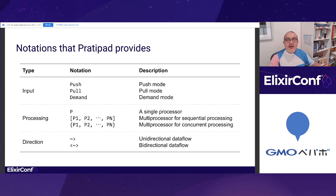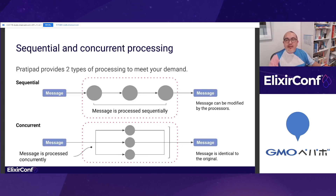Platypad provides two ways for message processing: sequential and concurrent. Sequential processing can be used when you want to process messages step by step — each processor transforms the message and passes it to the next processor. Concurrent processing can be used when you want to branch based on the message content, typically for such cases where you want to send the message content to some external storage.